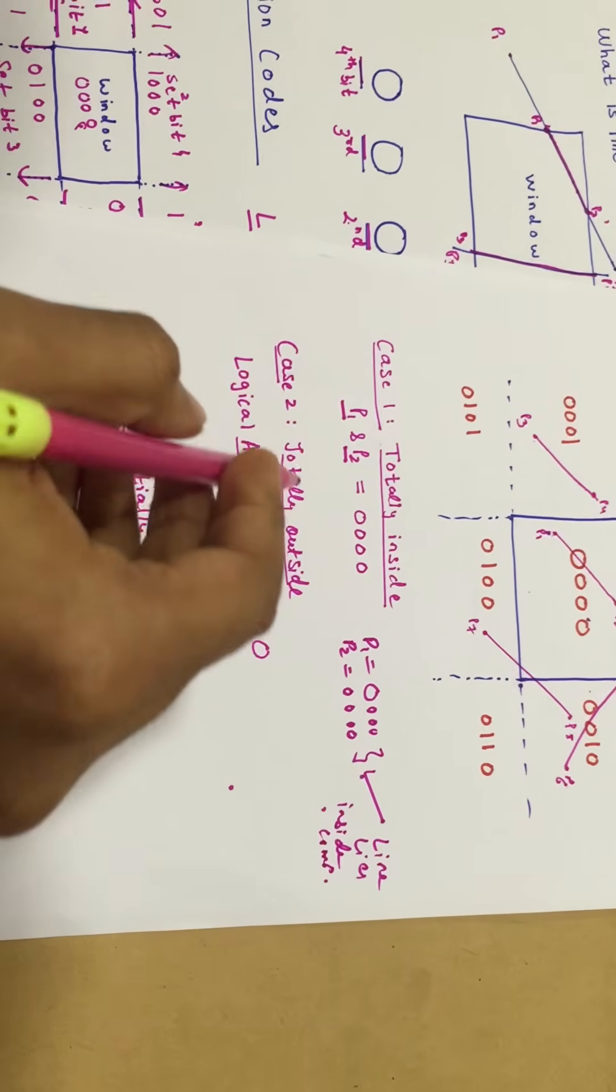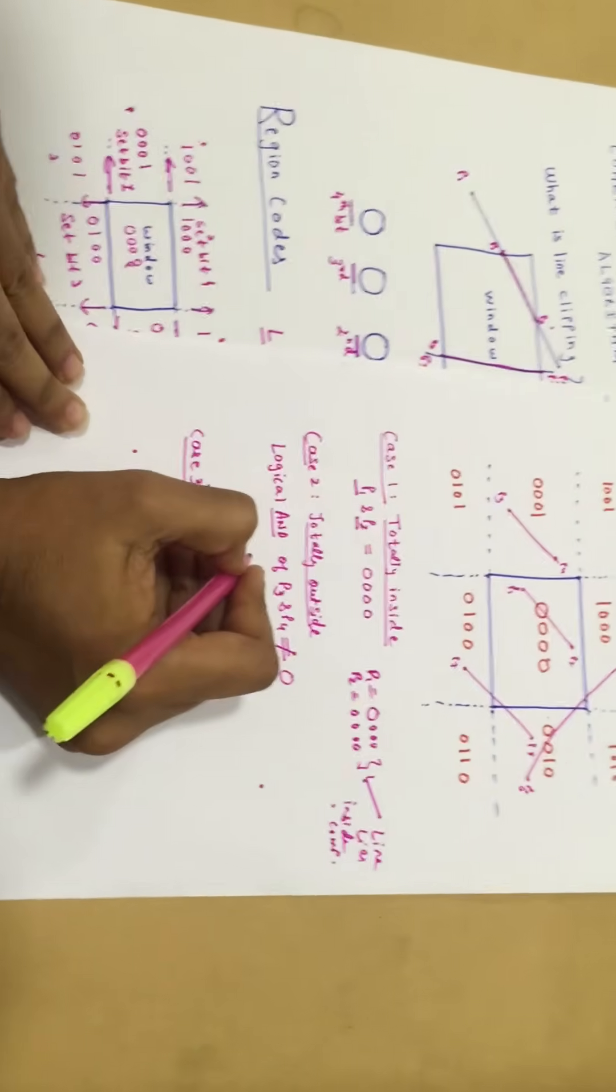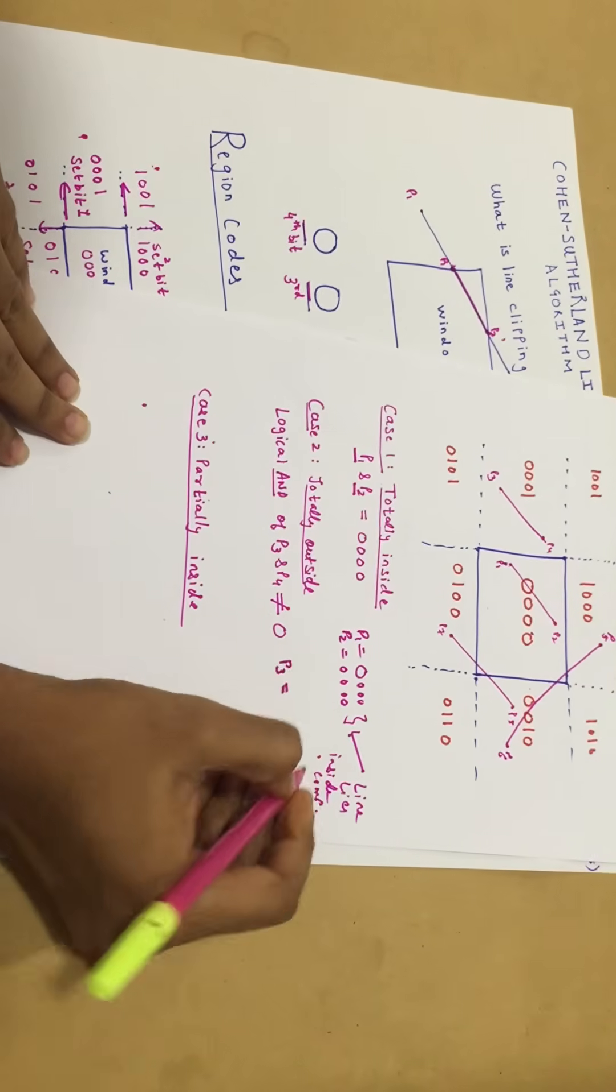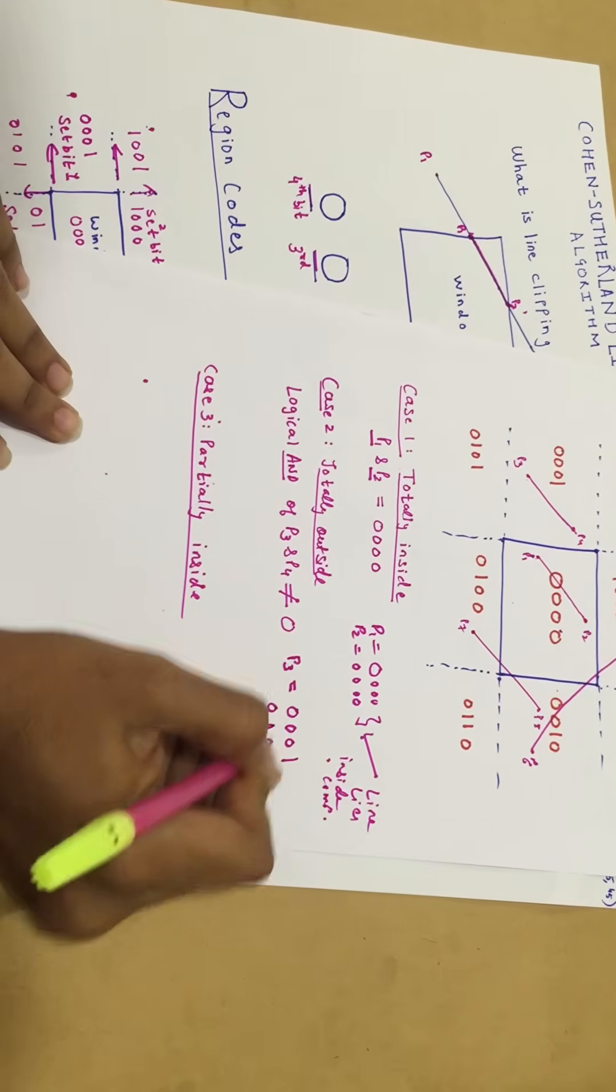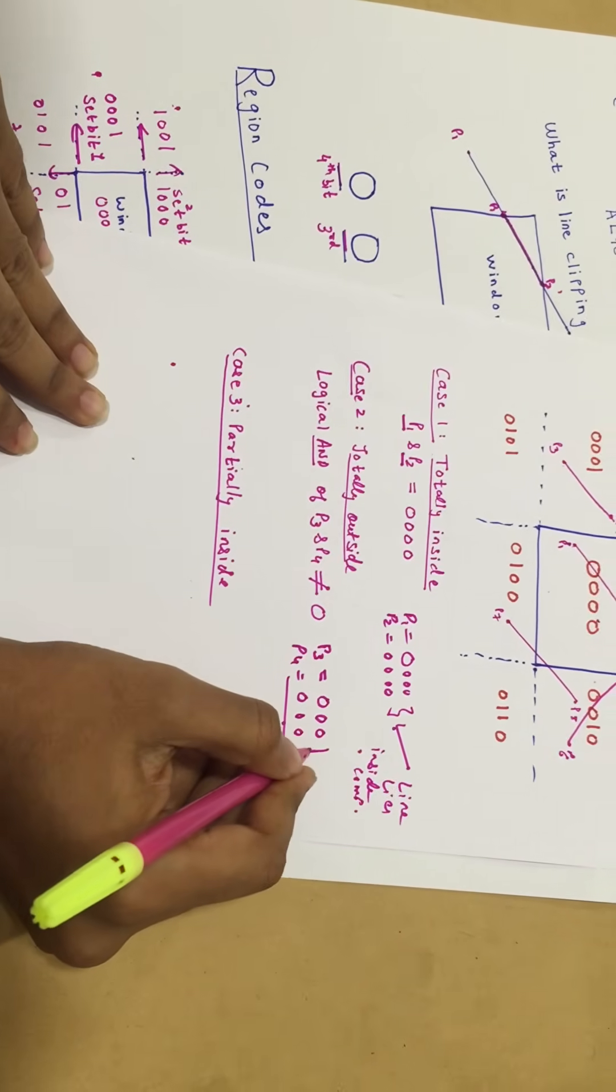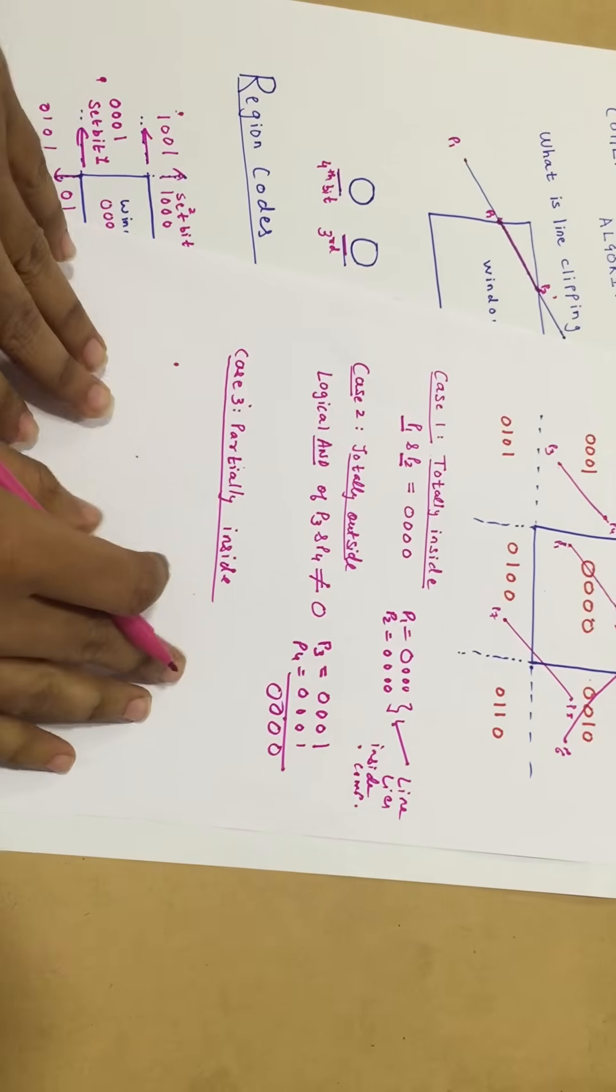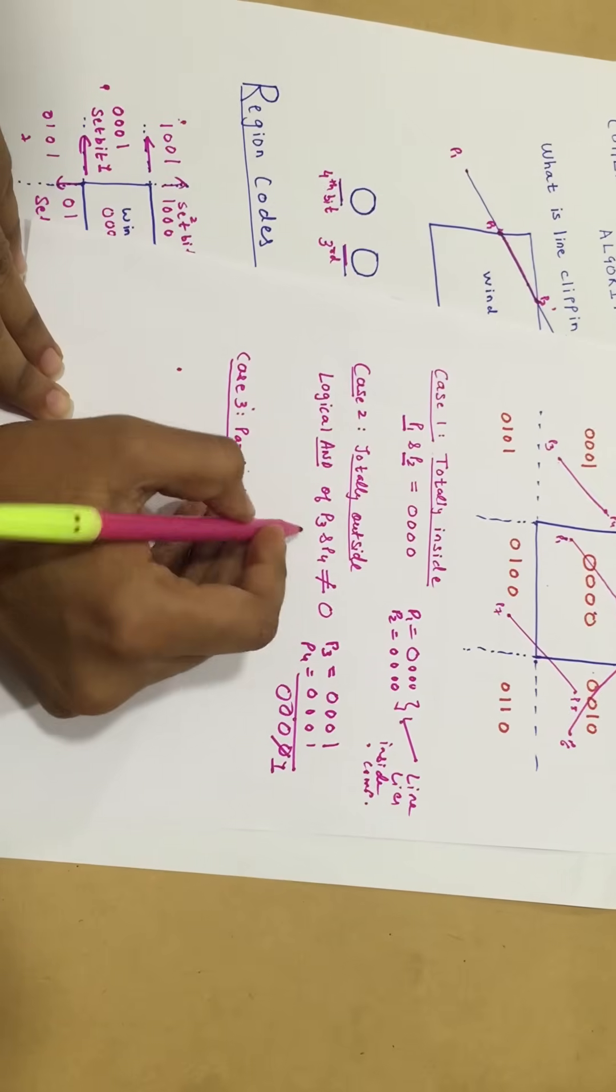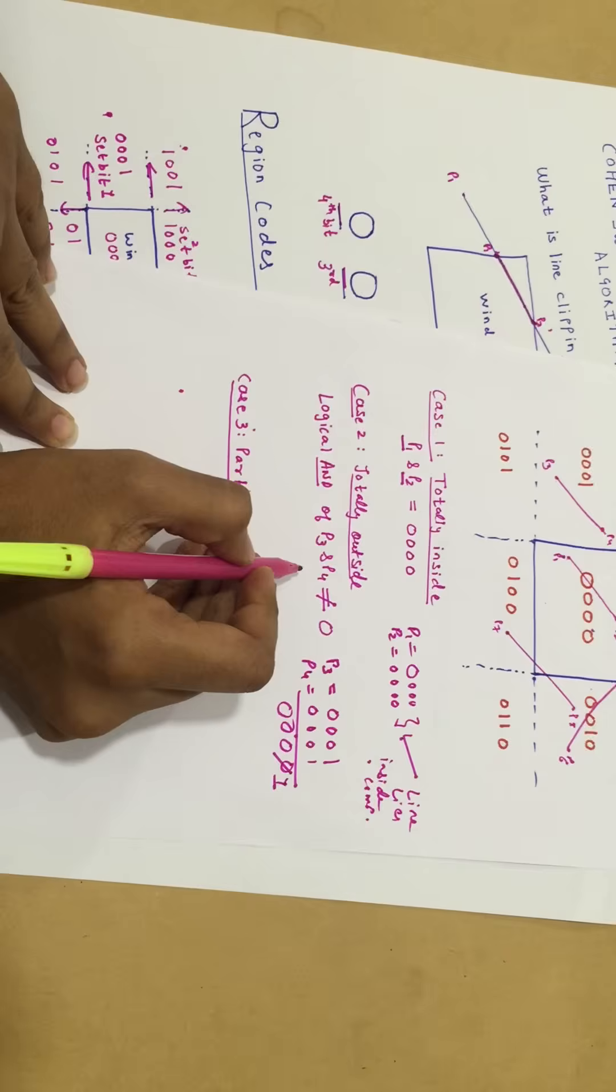Let's take the second case. When the line is totally outside, as in the case of P3 and P4. For that, we take the logical AND of points P3 and P4. P3 here equals to 0,0,0,1. P4 equals to 0,0,0,1. And now I have to take the logical AND of them. 1 and 1 is 1. So when the logical AND of P3 and P4 is not equal to 0, they lie totally outside.